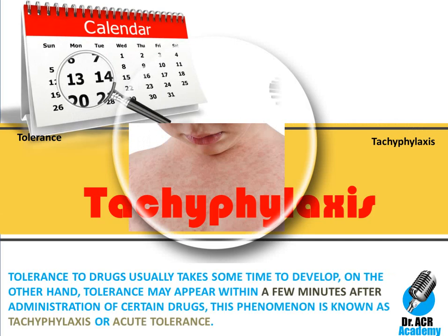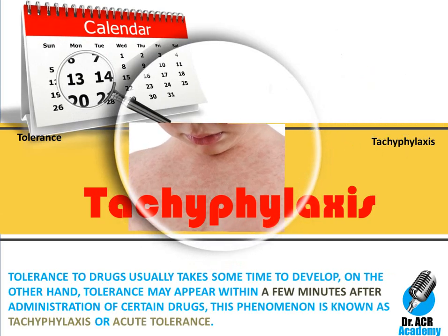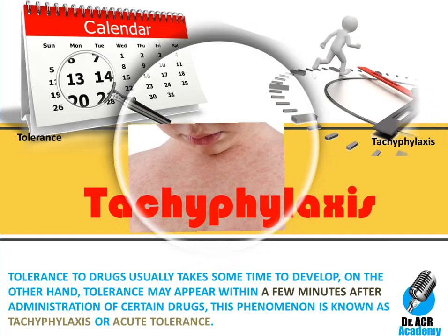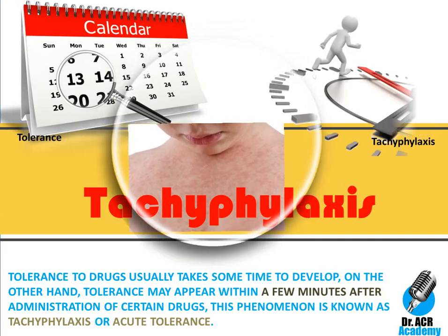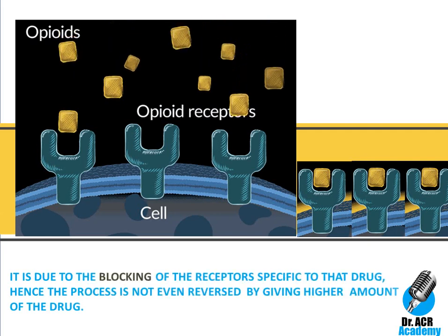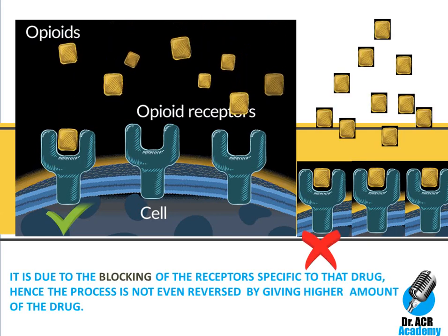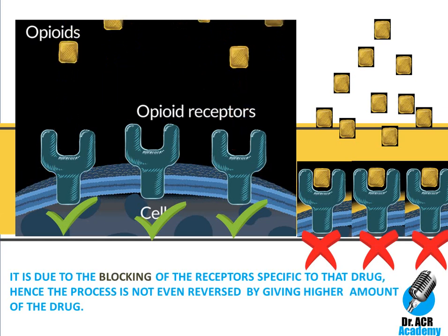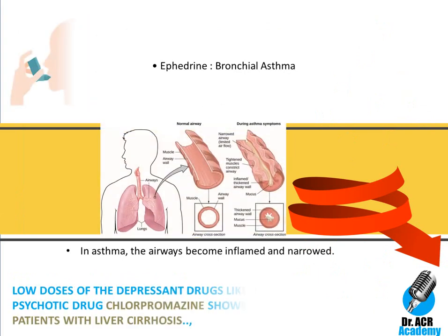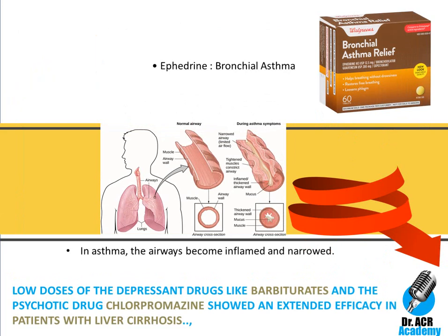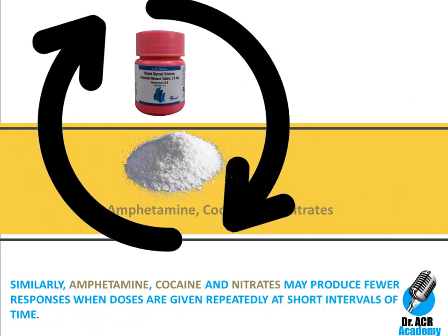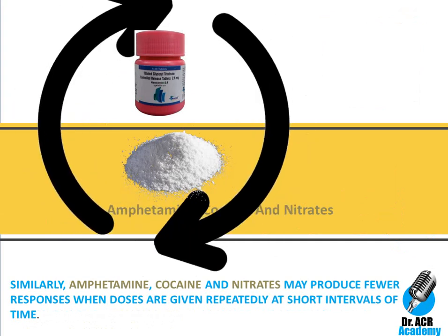Tolerance to drugs usually takes some time to develop. On the other hand, tolerance may appear within a few minutes after administration of certain drugs — this phenomenon is known as tachyphylaxis or acute tolerance. It is due to the blocking of receptors specific to that drug, so the process is not reversed even by giving a higher amount. For instance, ephedrine given in repeated doses at short intervals in the treatment of bronchial asthma may produce very little response immediately after the initial dose. Similarly, amphetamine, cocaine and nitrates may produce fewer responses when doses are given repeatedly at short intervals.